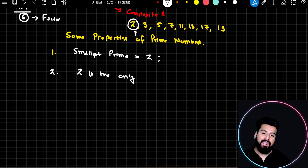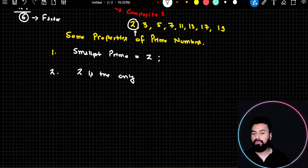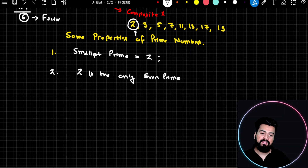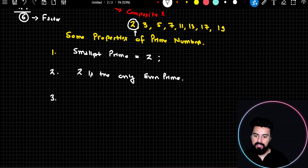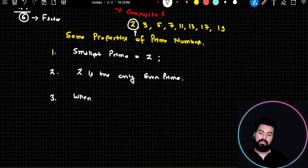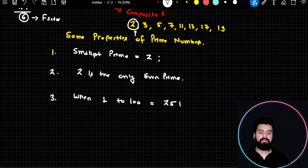You will not find any even number which is prime other than 2. So 2 is the only even prime number in the series. The third important property which you should know as a fact: when counted from 1 to 100, there are a total of 25 prime numbers.